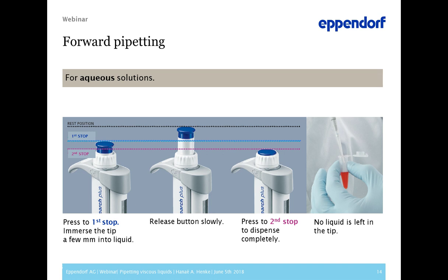Let's go through the classic pipetting technique, which is forward pipetting — something most of you do in the lab almost every day. You push the operation button down to the first stop, aspirate the liquid, then push to the second stop for dispensing, including the blowout. This is daily business and most effective with aqueous solutions, buffers, etc. When using this technique with viscous fluids, some liquid remains in the tip because the air inside the pipette is compressed against the viscous liquid and the blowout cannot be executed properly. The slow flow behavior additionally hinders the liquid flow from natural blowout. The set volume is never dispensed accurately.